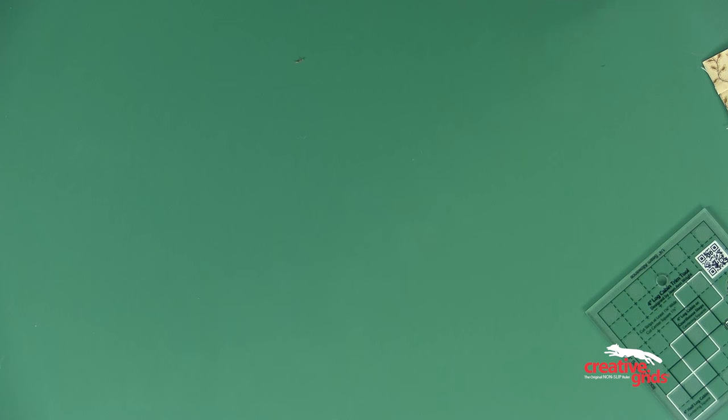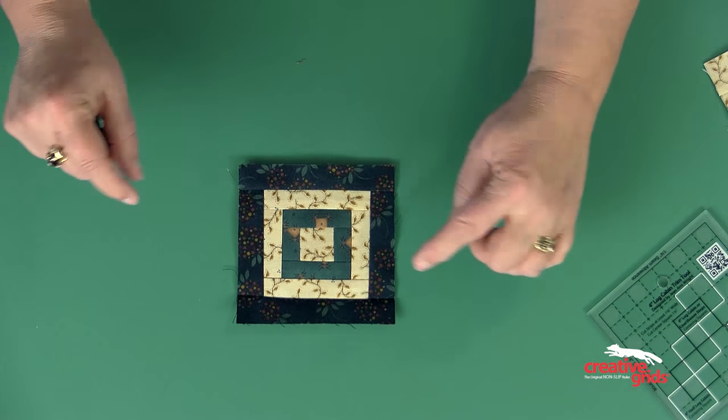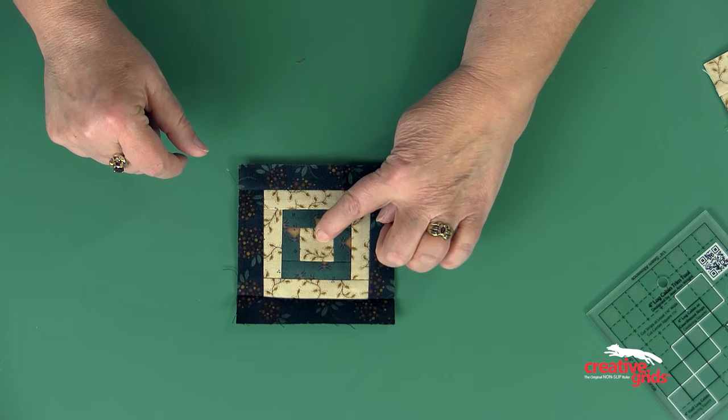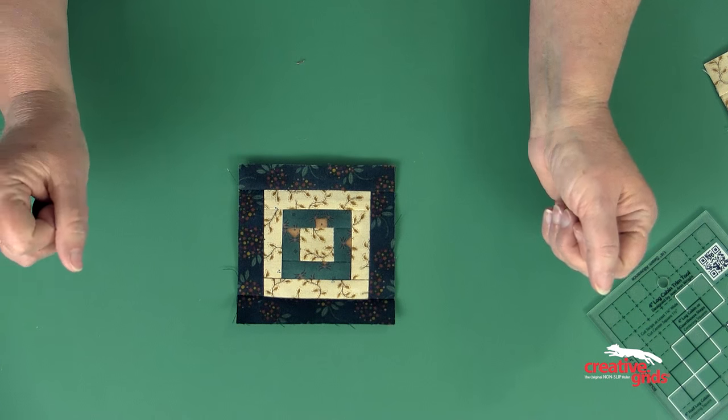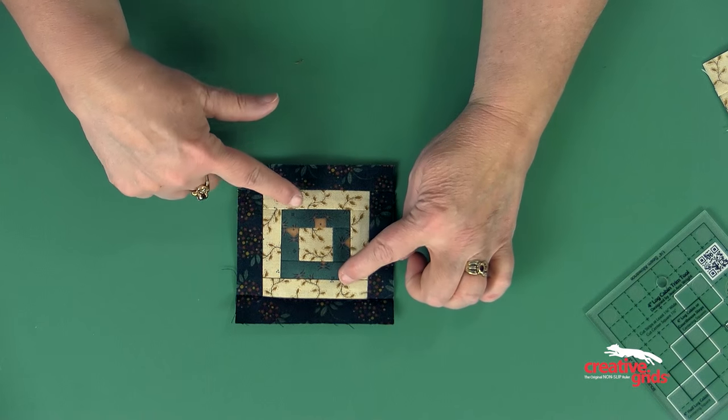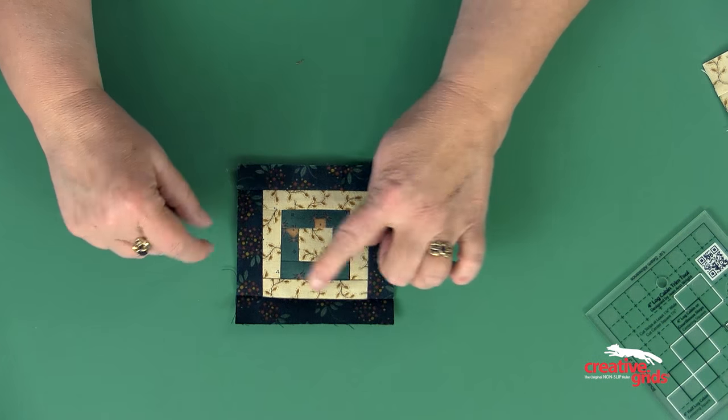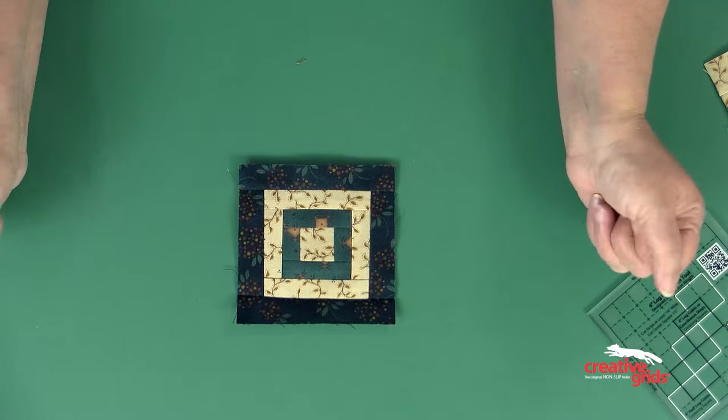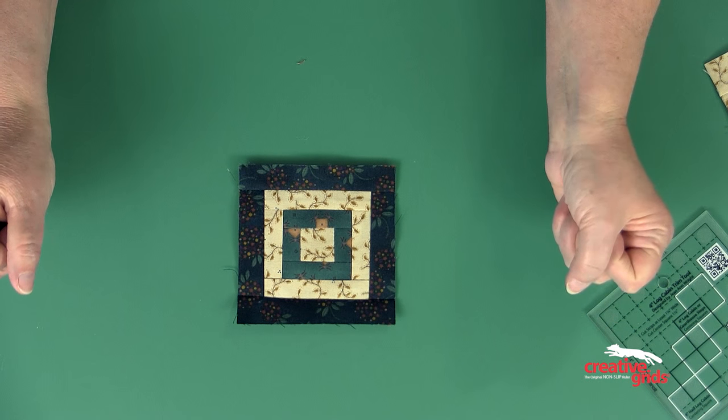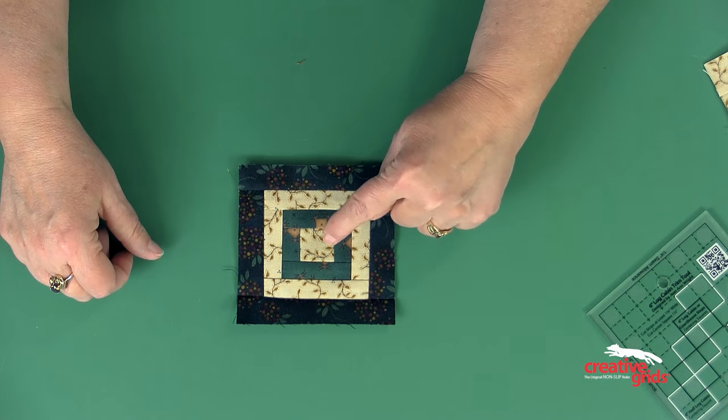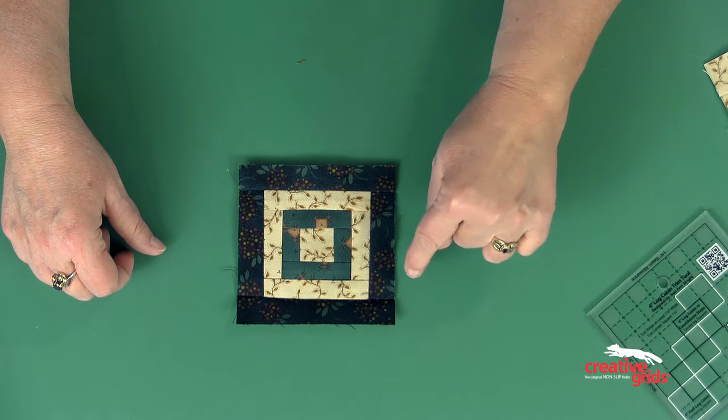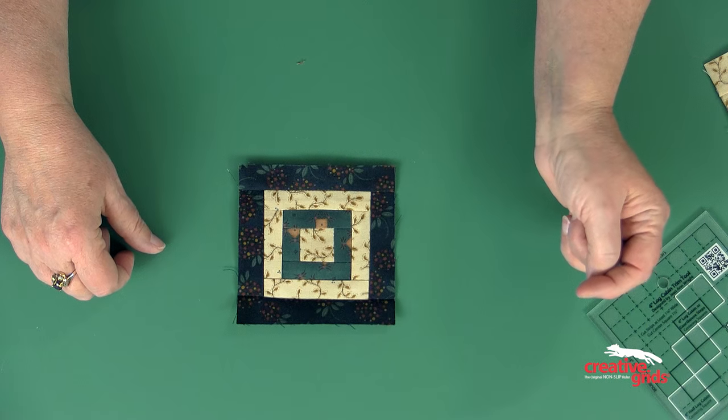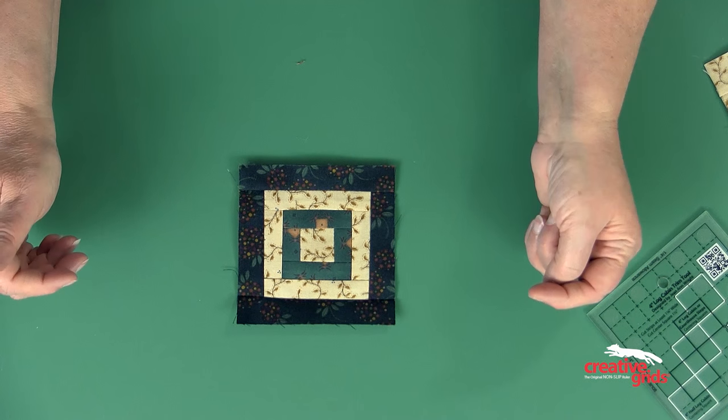You can also do a square-in-a-square log cabin. I started with a light square, and then my entire round this time is sewn like a courthouse steps. So I sewed opposite sides and opposite sides, but they're the same color. And so this gives you the effect of nested squares. If I was putting this together in a quilt, I would start one with light and one with a dark square, so there would be a light and a dark next to each other on the outside edge, and these would create a design.